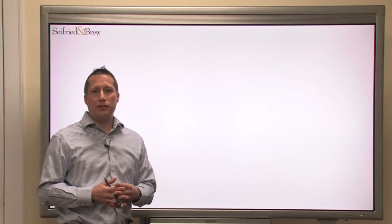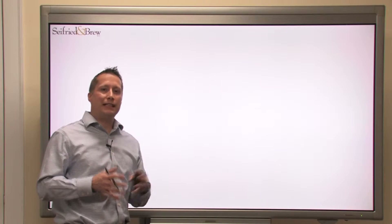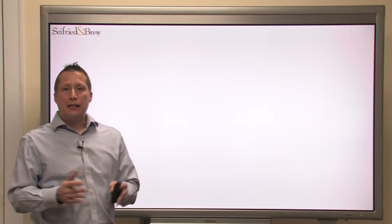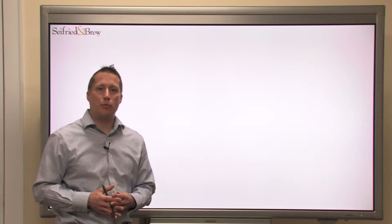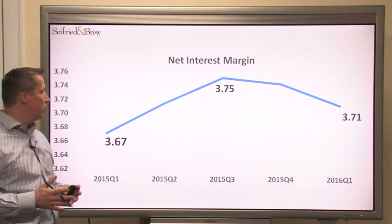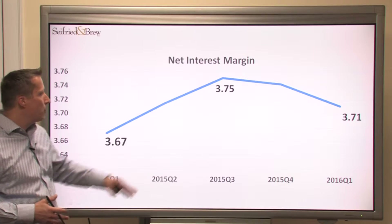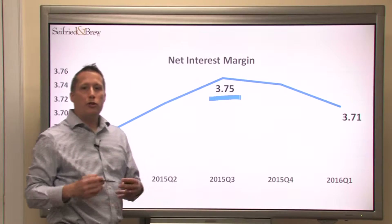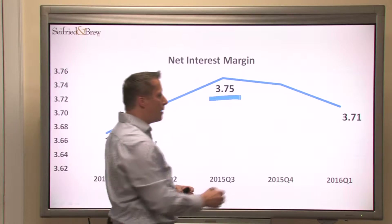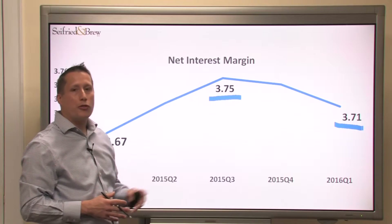We've been saying for the past couple of years to anticipate the net interest margin to begin to contract, and we haven't really seen that year over year as we look back in history. However, the last couple of quarters we've started to see this net interest margin begin to compress. As you can see here, the net interest margin for these community banks goes from the first quarter of 2015 at 3.67, peaked in the third quarter of 2015 at 3.75, and then comes back down to 3.71 for the first quarter of 2016.